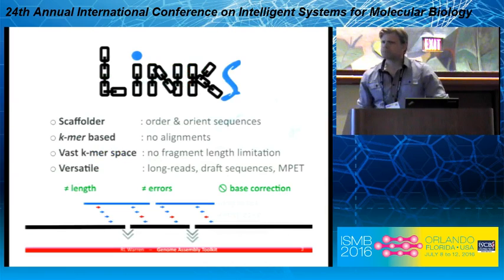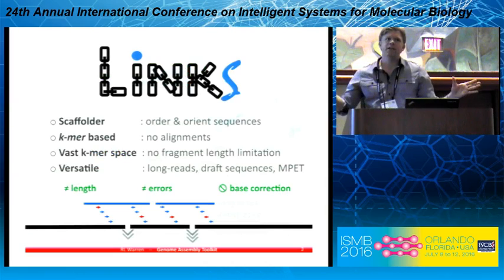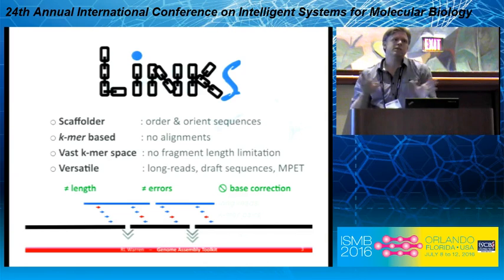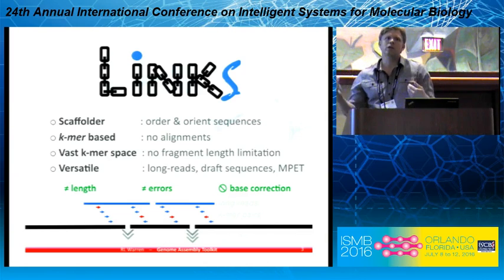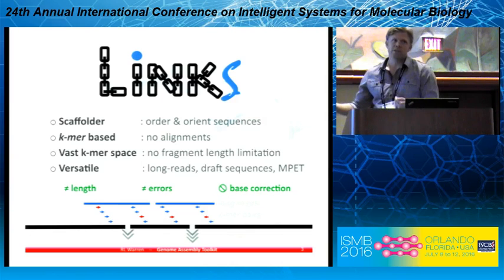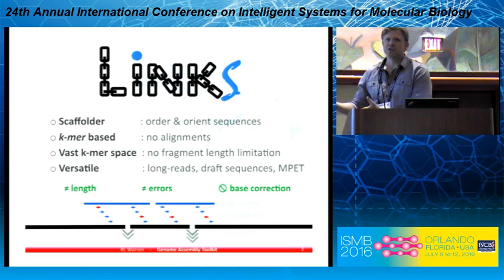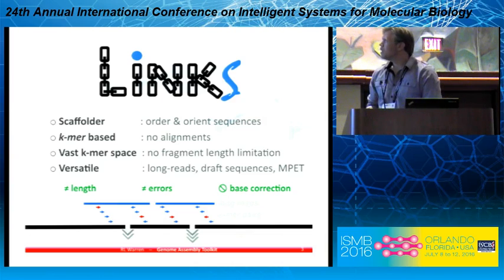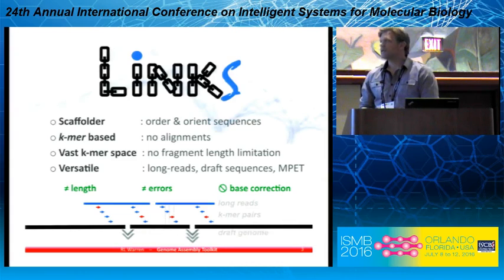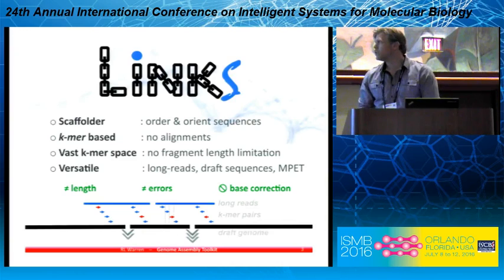Lynx is a scaffolder. It essentially orders and orients sequence contigs or scaffolds into a higher arrangement called a scaffold. If you apply that to a scaffold, that would be called an ultra scaffold or ultra contig. The key advance in Lynx is it's k-mer based, so there's no alignment of reads necessary.